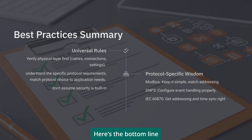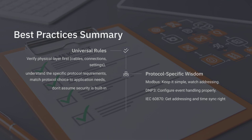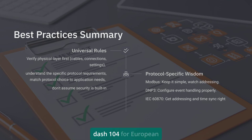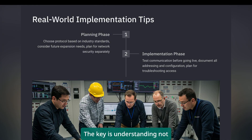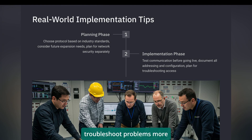Here's the bottom line: these protocols are tools, and like any tools, you need to pick the right one for the job. Modbus for simplicity and universal compatibility. DNP3 for North American power systems and applications that need sophisticated event handling. IEC 60870-5-104 for European power systems and international projects. The key is understanding not just how these protocols work, but why they were designed the way they were — that understanding will guide you to make the right choices and troubleshoot problems more effectively.